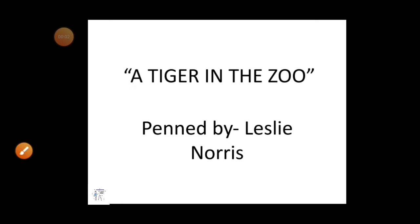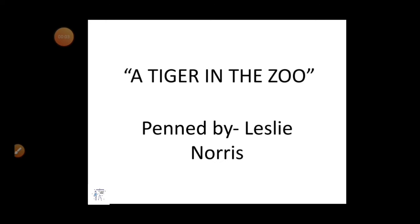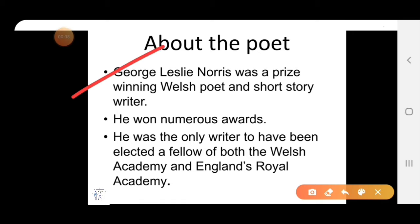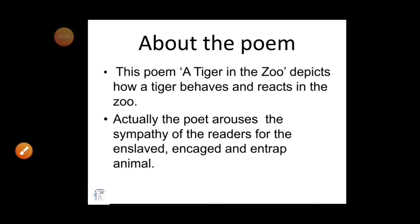A Tiger in the Zoo is a poem penned by Leslie Norris. George Leslie Norris was a prize-winning Welsh poet and short story writer. He won numerous awards for his literary work. He was the only writer to have been elected a fellow of both the Welsh Academy and England's Royal Academy. Now we will see what is given in this poem.